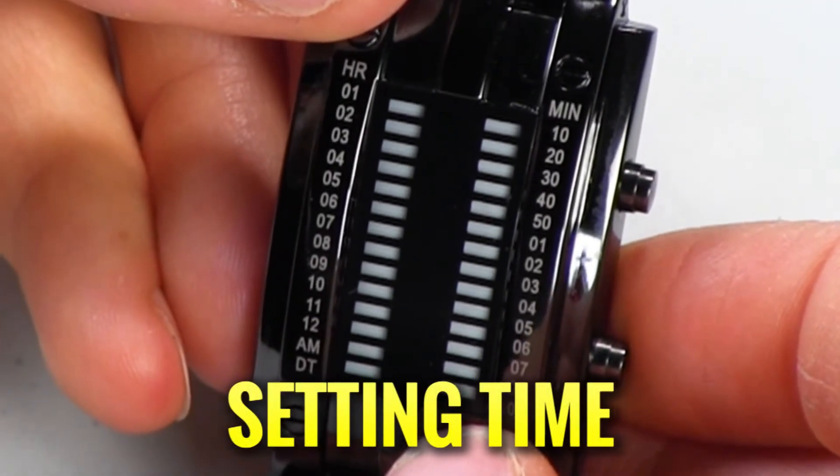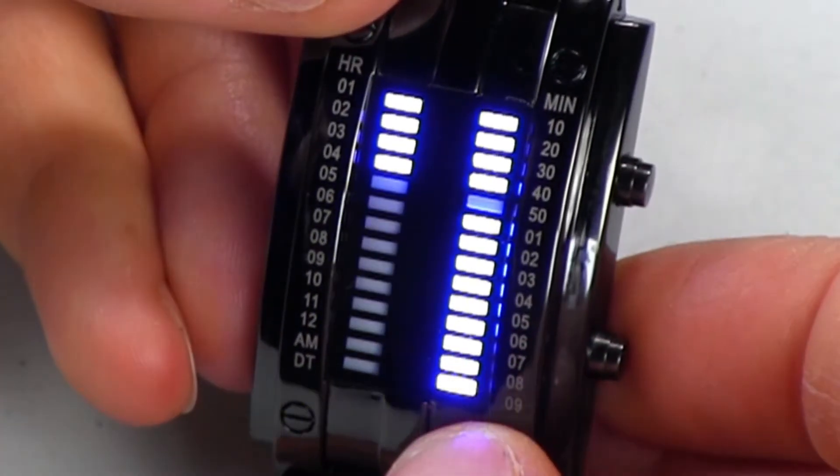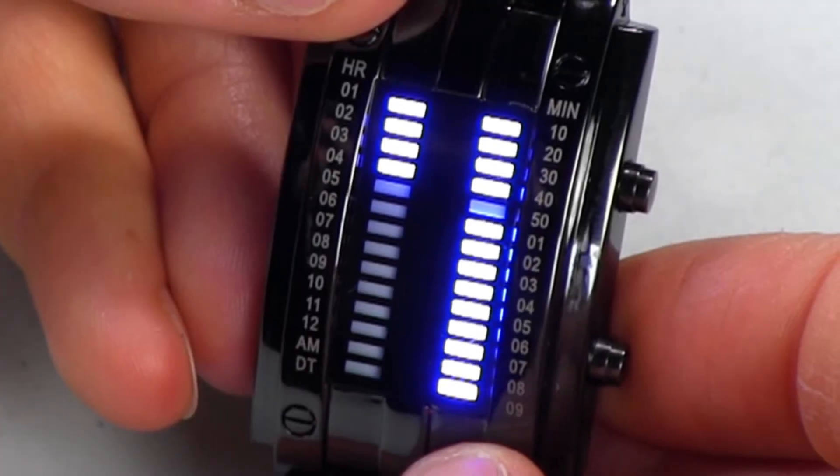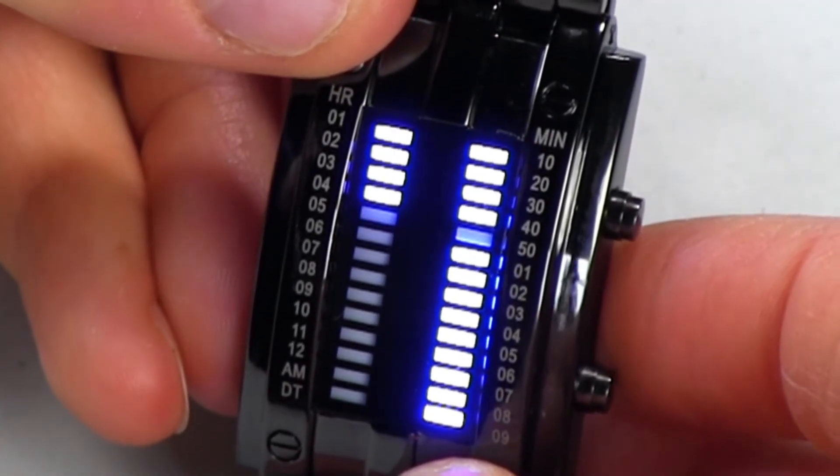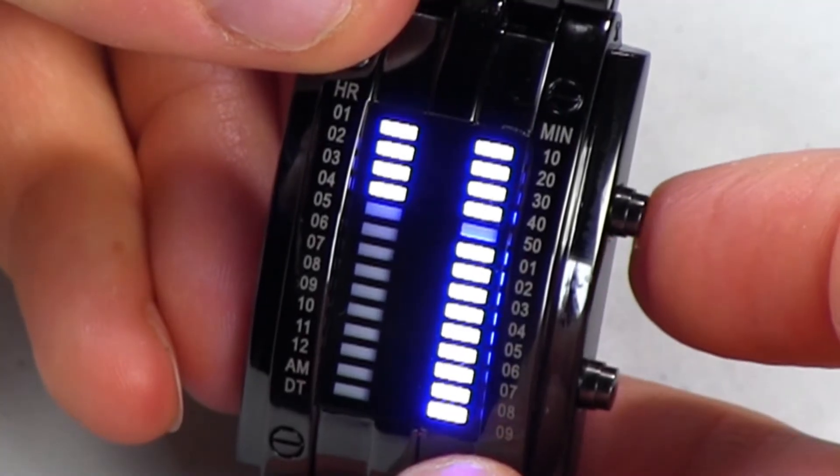Right now I'm going to show you how to set the time. Hit the top button once. It shows that it's 4:48, 4:49. I hold the bottom button until the left side starts blinking. This means you can start to change and adjust the hour.